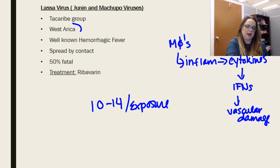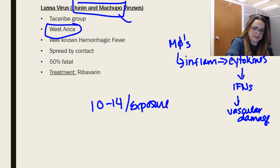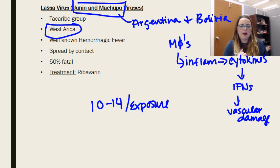We expect to see Lassa in West Africa, where it's best known to cause hemorrhagic fevers. Junin and Machupo, the other members of the Tacaribe group, cause similar syndromes, but we expect to see Junin and Machupo in Argentina and Bolivia respectively. So they have a slightly different endemic area.